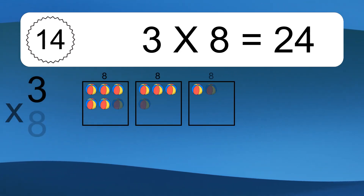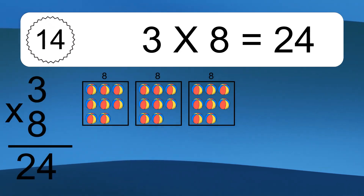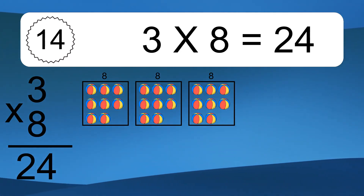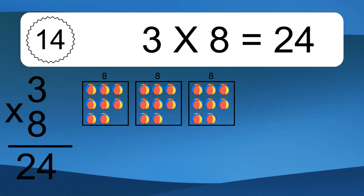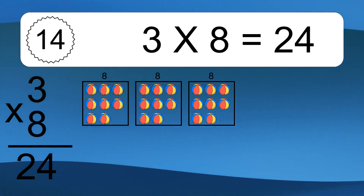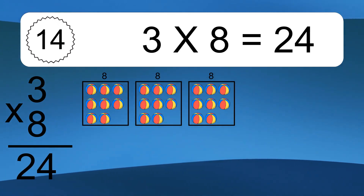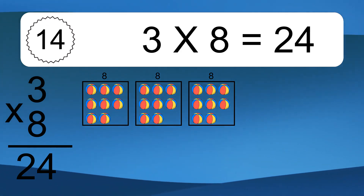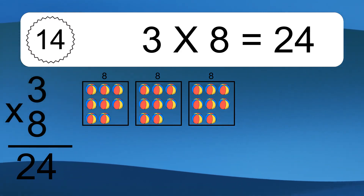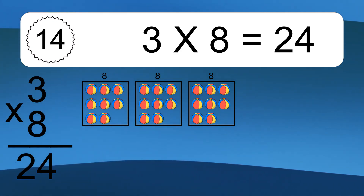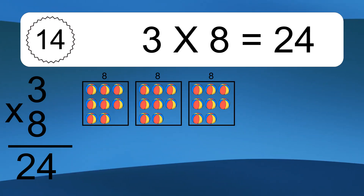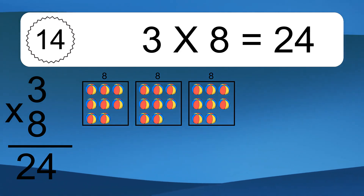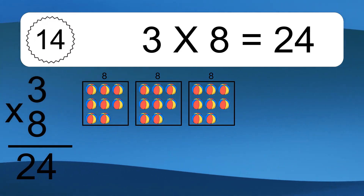3 times 8 equals 24. We have 3 boxes and each box has 8 colorful balls inside. If you count all the balls in all the boxes together, you will have 3 times 8 balls. This equals 24 balls.